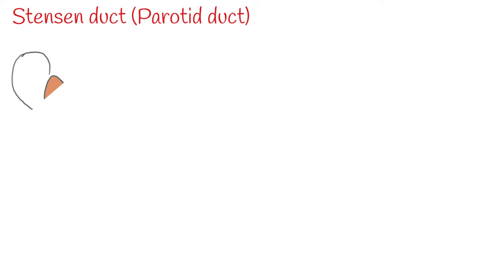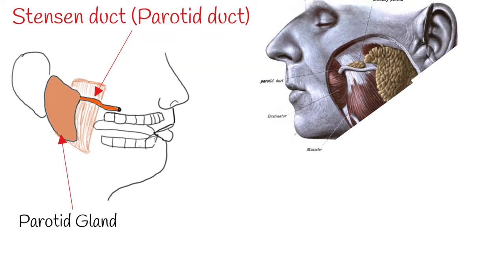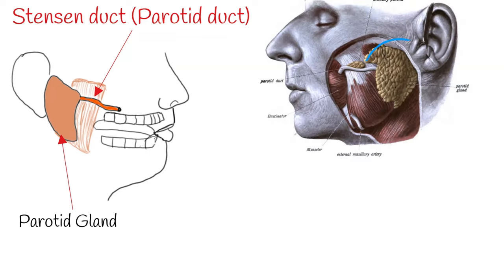Stenson duct, also known as parotid duct, is a salivary duct. It takes saliva from the parotid gland into the mouth. The parotid gland is a major salivary gland.